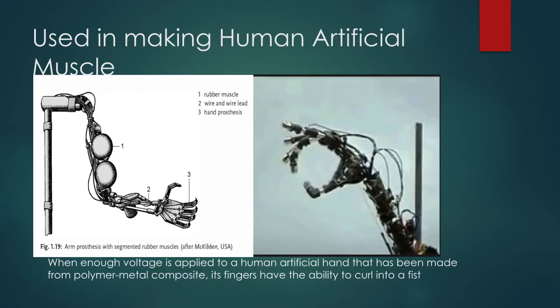This is showing you that it's used in human artificial muscle research. When voltage is applied to a human artificial hand that has been made from polymer metal composite, its fingers have the ability to curl into a fist.